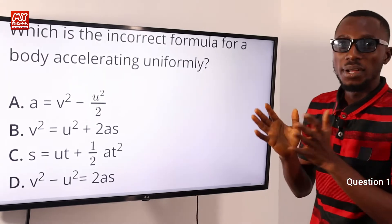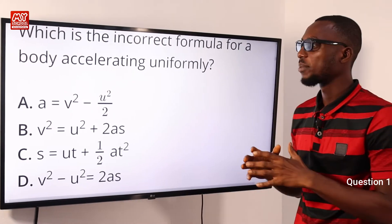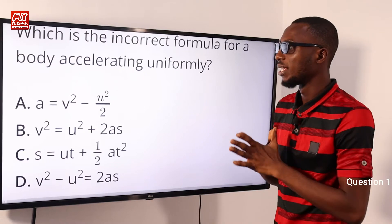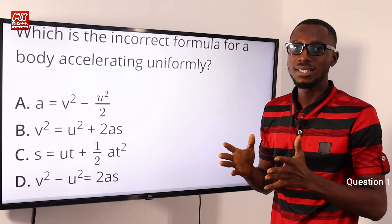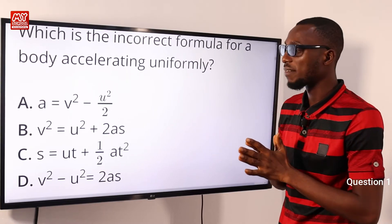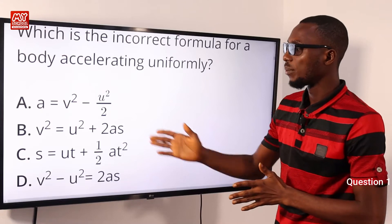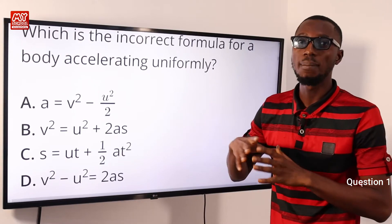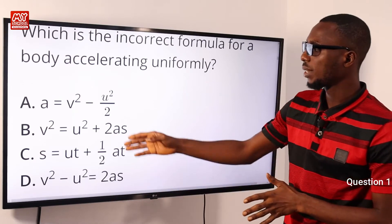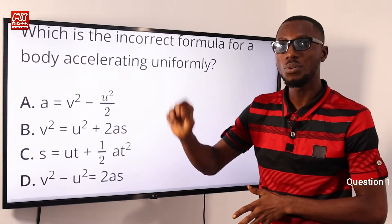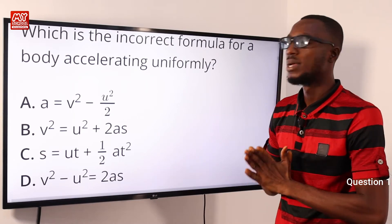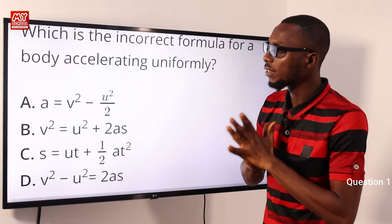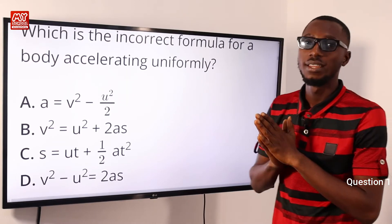Question one: which is the incorrect formula for a body accelerating uniformly? We can use the equations of motion to determine which option is incorrect. Recall that v = u + at, v² = u² + 2as, and x = ut + ½at². Looking at the options, rearranging gives v² - u² = 2as. The incorrect option is option A, which contains a = v² - u² over 2. So option A is the correct answer.